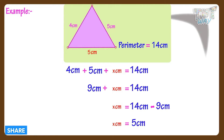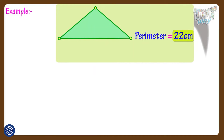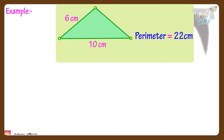Now let's take another example. Here we have a triangle and its perimeter is given — it is 22 centimeters. The lengths of two of its sides are given: 10 centimeters and 6 centimeters. We have to find the length of the third side. We know the length of the third side equals perimeter minus the sum of the other two sides.